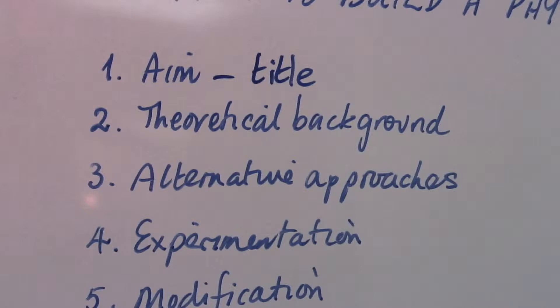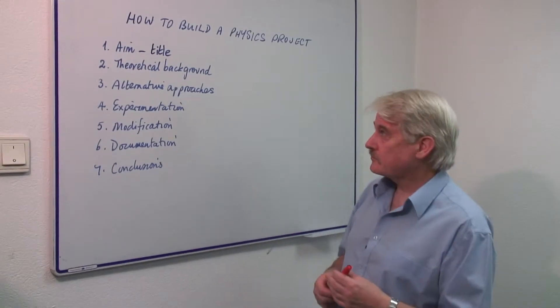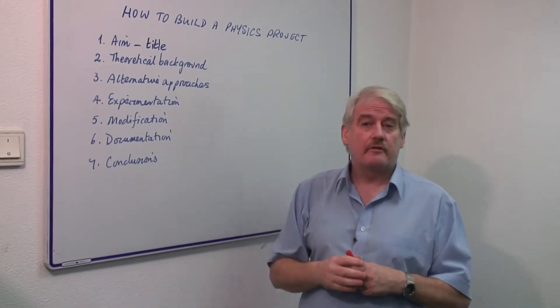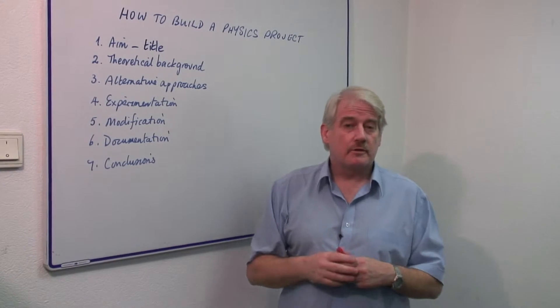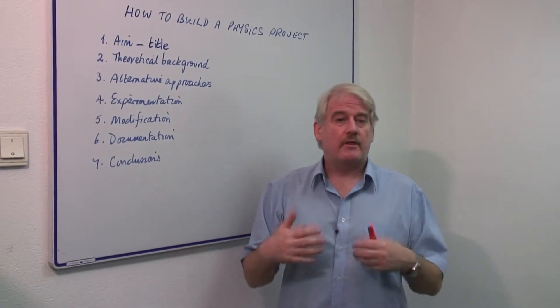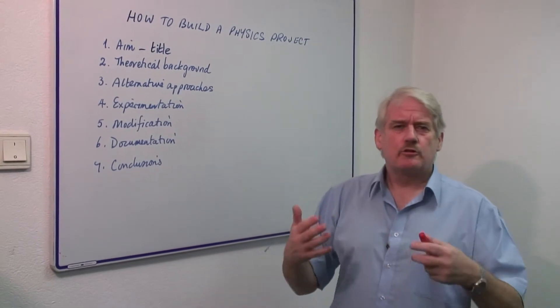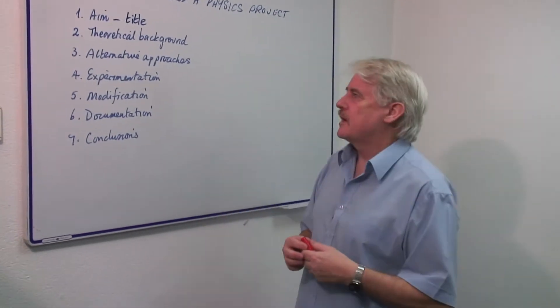First of all, we've got to decide on the title, on the subject of our investigation. And the second thing is we must know about the theoretical background. We don't want to go into doing an experiment without knowing what people already know, because we are looking to go a little bit further than that maybe.